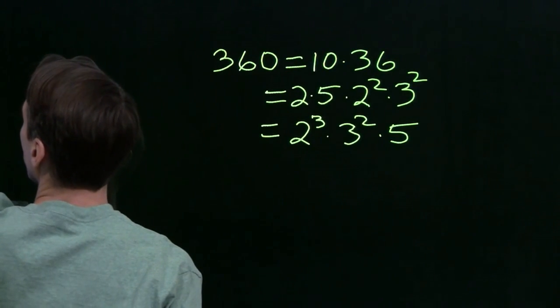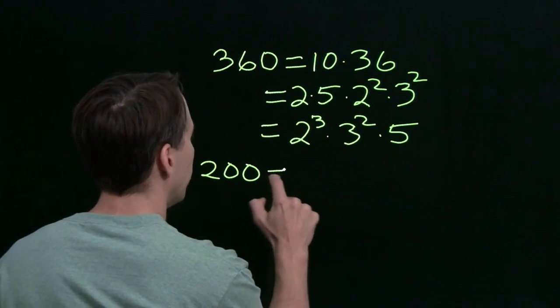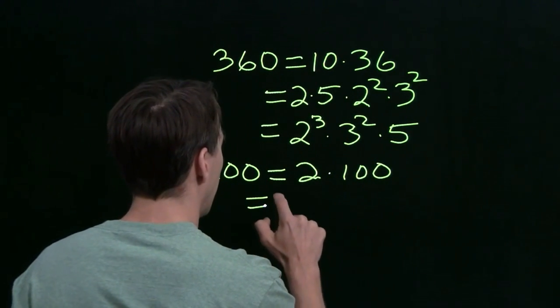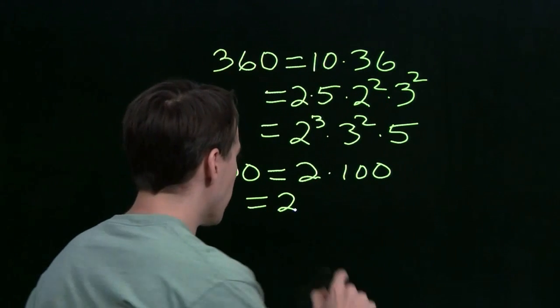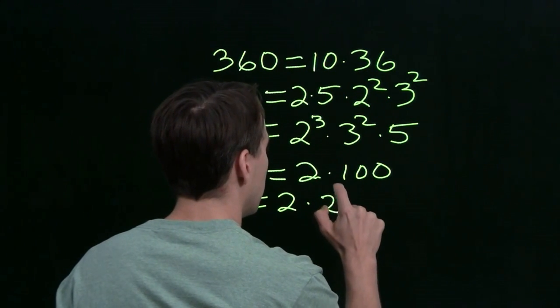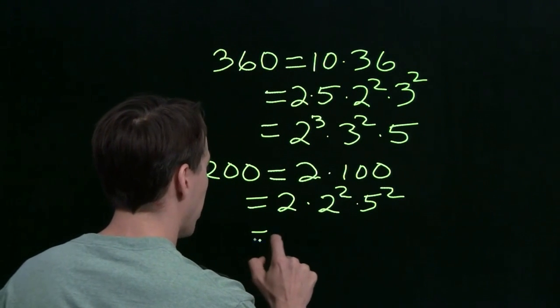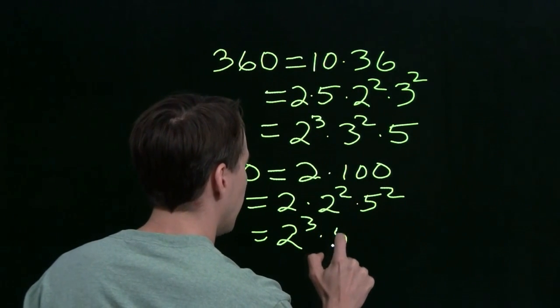All right, 200, let's do 200 next. 200, well 200 is just 2 times 100, and 100, well that's 10 squared, so that's 2 squared times 5 squared, 2 squared times 5 squared, and that gives me a prime factorization of 2 cubed times 5 squared.